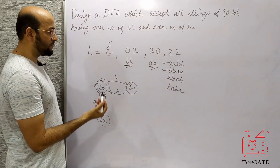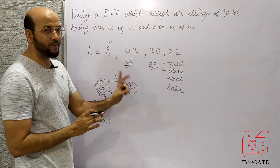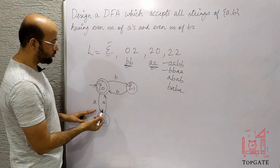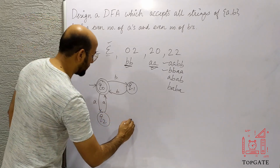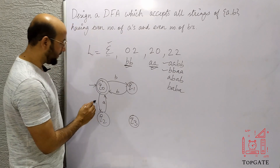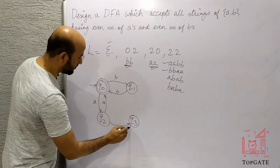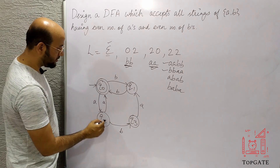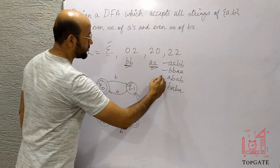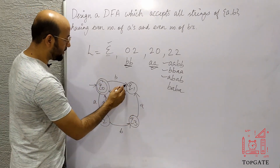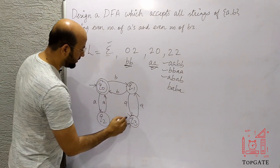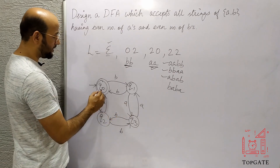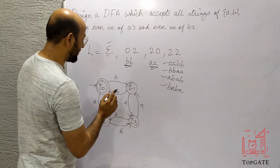Now for ABAB — this has two A's and two B's, so it should be accepted. But from Q0, after reading A we go to Q2, and there's no move defined for B from Q2 yet. So I'll add one more state Q3. The path for ABAB is: Q0 with A to Q2, Q2 with B to Q3, Q3 with A to Q1, Q1 with B to Q0 — so ABAB is accepted. Similarly, BABA follows the path Q0 to Q1 with B, Q1 to Q3 with A, Q3 to Q2 with B, Q2 to Q0 with A — so BABA is also accepted.